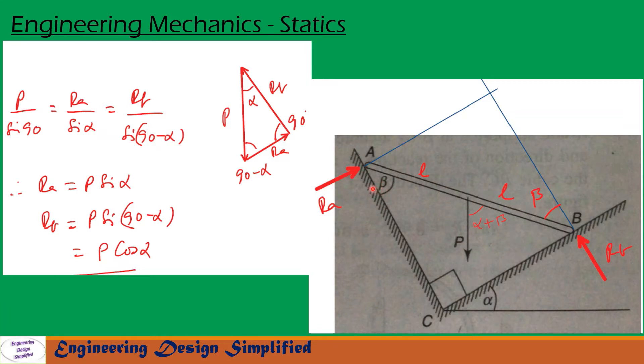Since these two surfaces are smooth, there are no frictional forces. The angle between this bar and this plane is beta. So this angle will also be beta between this RB and this bar. So if this is beta, then angle between P and this bar will be alpha plus beta.